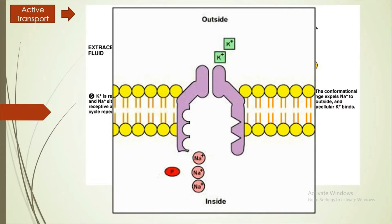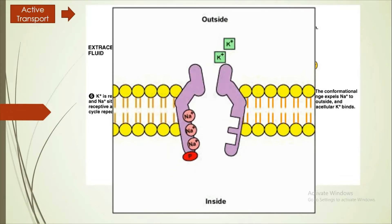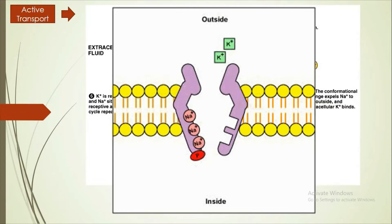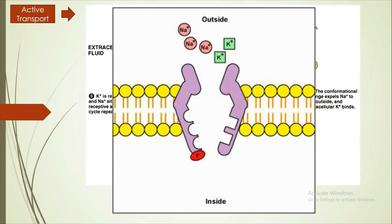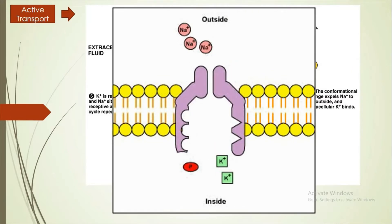Here is the animation for the sodium-potassium pump. The sodium will attach first. Then the phosphate group will attach itself — this will allow the sodium to be transported out. At the same time, the potassium will get inside. Once it attaches to the transport protein, the phosphate group will leave, and finally the potassium can get inside.